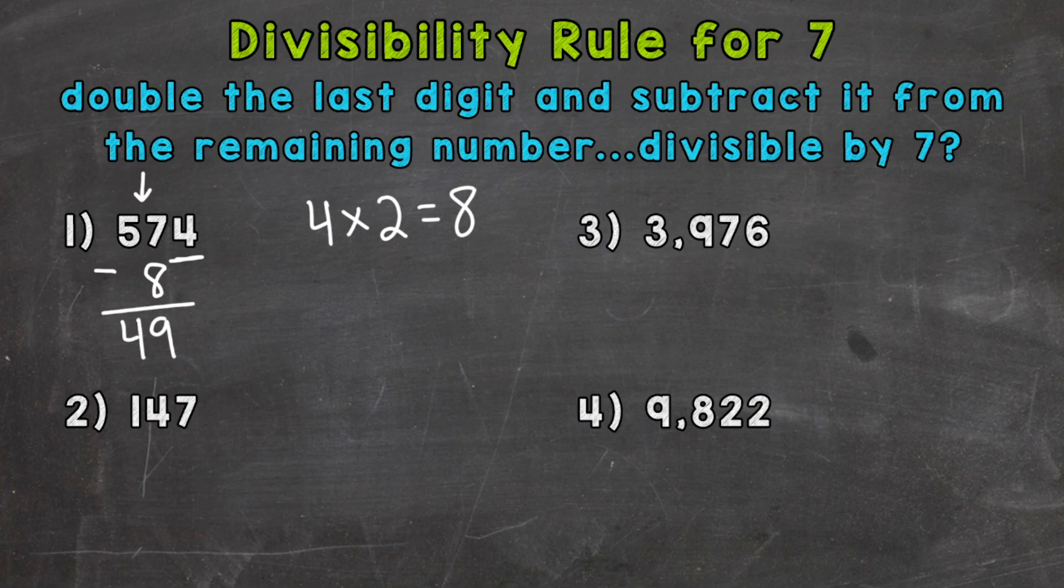Therefore, our original number, 574, is divisible by 7. Let's take a look at number 2 where we have 147.